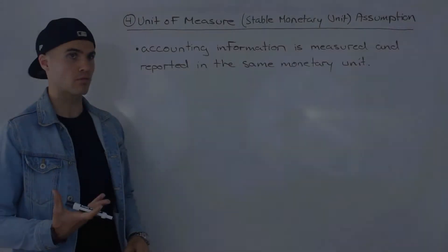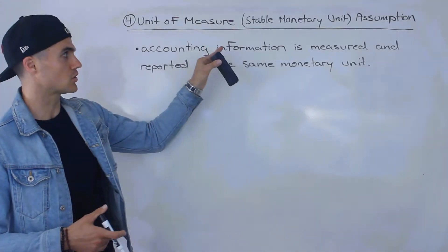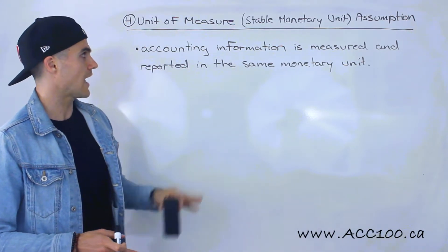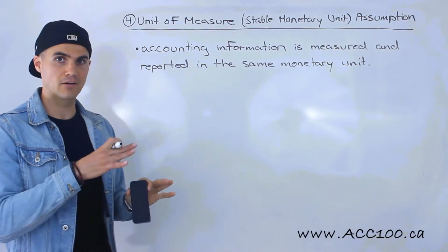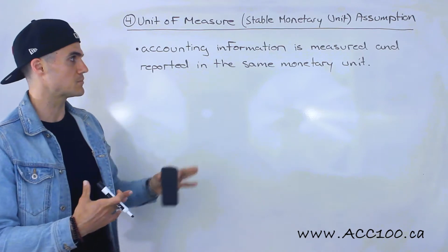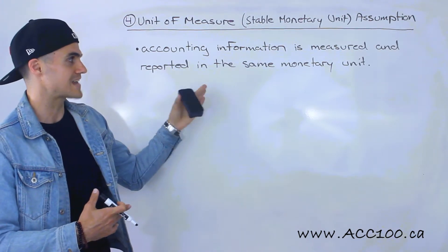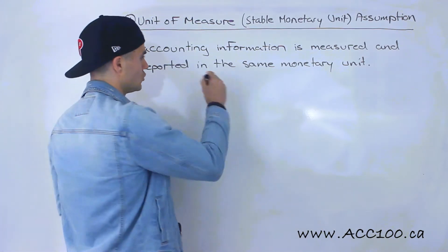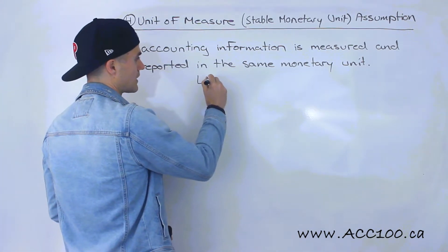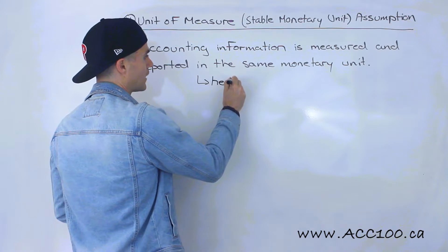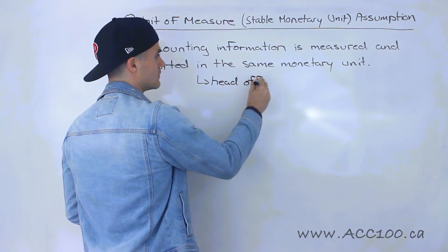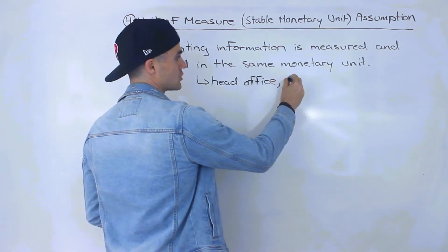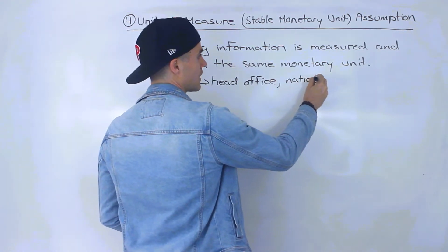Moving on to the fourth assumption, we have the unit of measure, sometimes called the stable monetary unit assumption. It basically assumes that all accounting information and financial statements are measured and reported in the same monetary unit — the same currency. Usually, the currency is determined by wherever the head office is located, or whatever that national currency is of the head office.